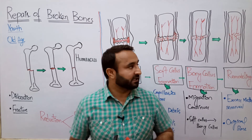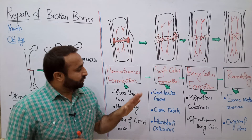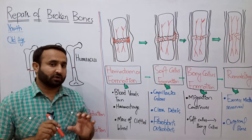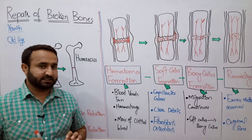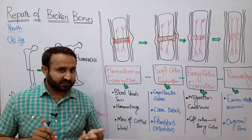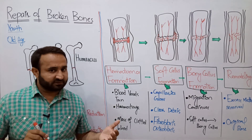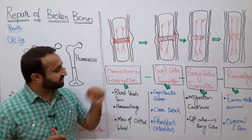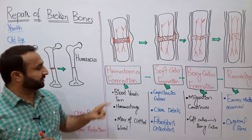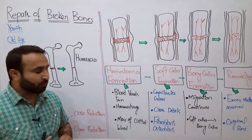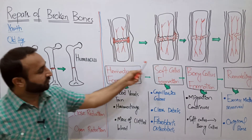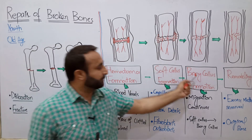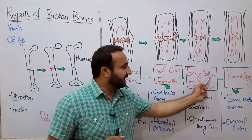There are four phases of bone repair — this is very important. Long questions, short questions, and many MCQs come from this. The four stages are: first, hematoma formation; second, soft callus formation; third, bony callus formation; and fourth, remodeling.